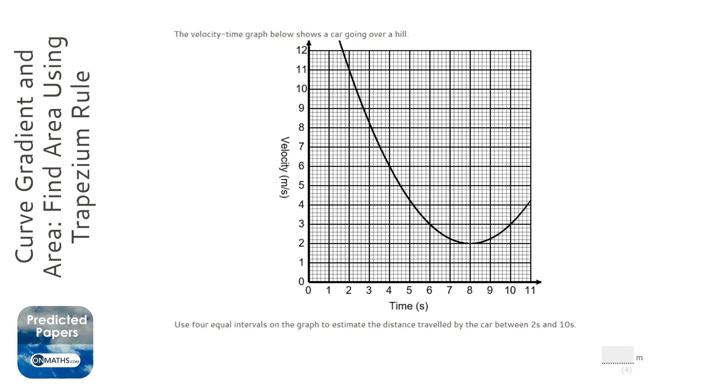The first thing to notice with this question is that to find a distance on a velocity-time graph, you've got to work out the area underneath the curve. Now at A level there are much easier ways of doing this, but at GCSE we have to do this using the trapezium rule.